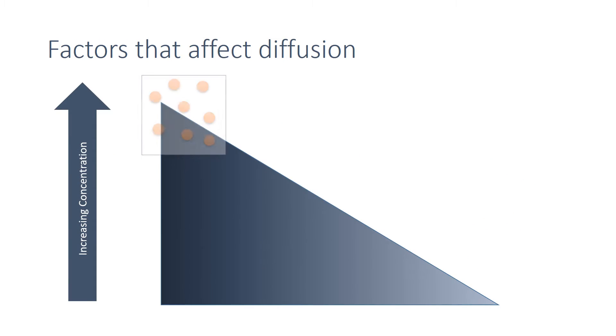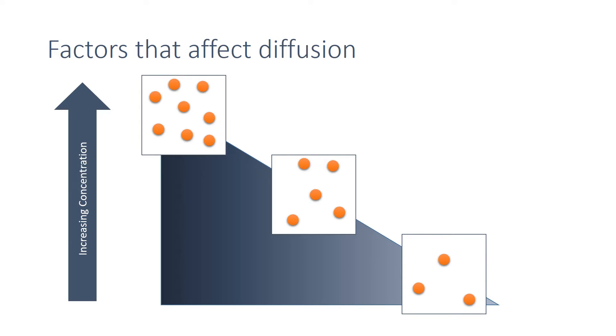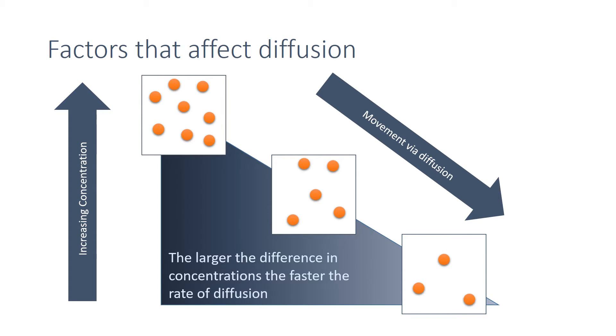As the concentration increases, particles will move from areas of high concentration to areas of low concentration, and we say that they are moving down their concentration gradient. As the difference increases, so does the rate of diffusion. A substance will therefore diffuse faster from an area of high concentration to an area of low concentration than it would from an area of medium concentration to an area of low concentration.